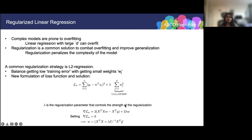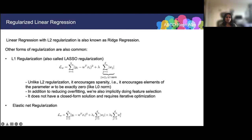The intuition is that the weights wⱼ represent the slope — how much a small change in the corresponding feature affects the label y — and you want these slopes to be small. The strength of this penalty is controlled by a regularization parameter lambda. Larger lambda puts a larger penalty on w and favors simpler models. We can still solve for w by setting the gradient to zero, yielding a closed-form solution with an additional lambda·I term. Linear regression with L2 regularization is also known as ridge regression.